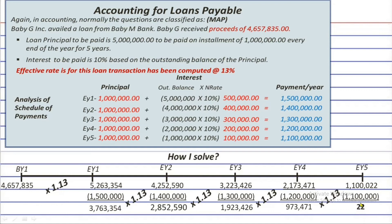The remainder of 22 is likely due to rounding of factors used by the maker of this sample problem — it's okay since 22 is very immaterial. Let's end the episode here to keep this video short. In the next episode we will start enumerating all the possible questions for accounting for loans payable. If you learned something, please click like, subscribe, and hit the notification bell — select 'all' to be updated on my next videos. Thank you for watching and see you on the next one.